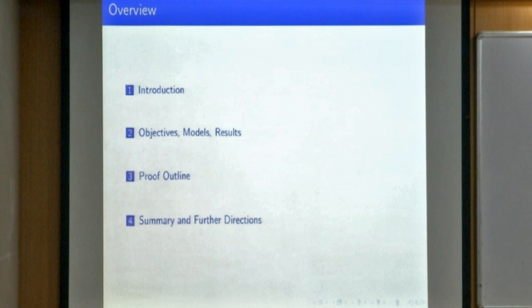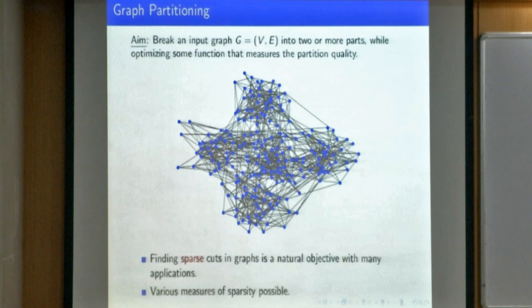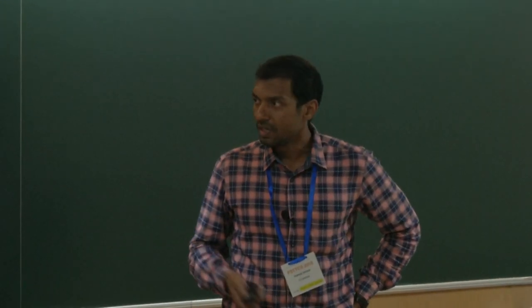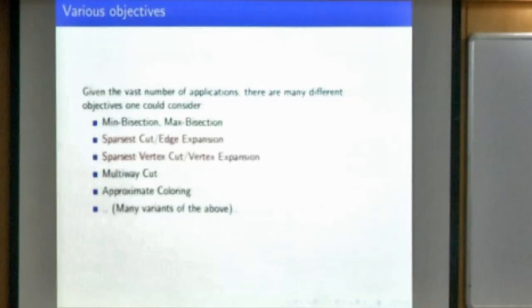Let me start with a bit of generic motivation before I actually define the objective and the models that we use. Graph partitioning in general refers to basically given an input graph, you break it into two or more parts while trying to minimize a certain objective measure related to the partition. In many cases, looking at a sparse partition of the graph is useful both for application and interesting theoretically.